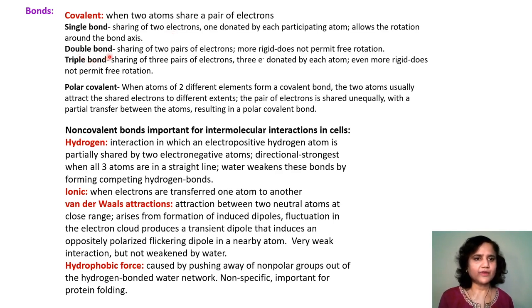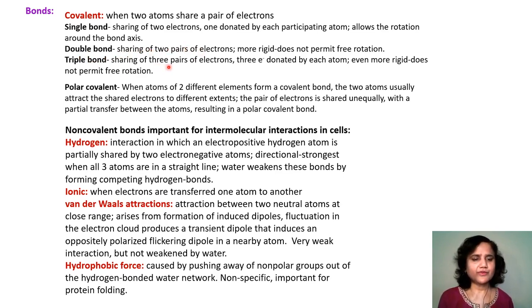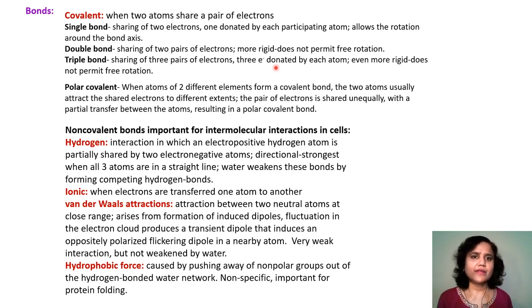Double bonds result from the sharing of two pairs of electrons — they are more rigid. Triple bonds result from the sharing of three pairs of electrons — they are even more rigid and do not permit free rotation.